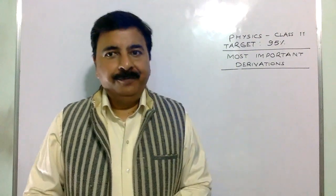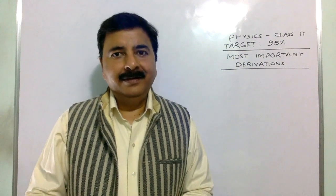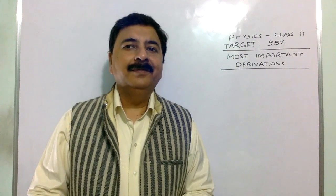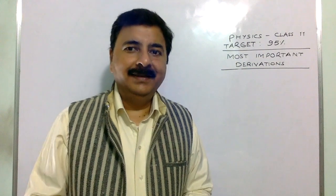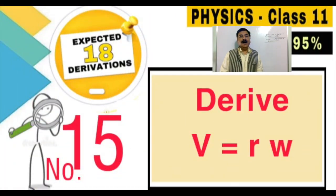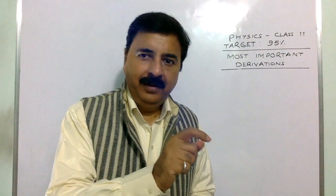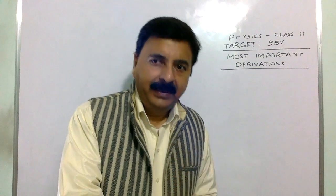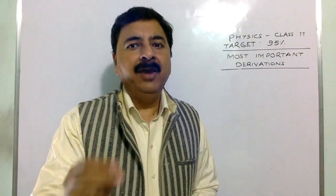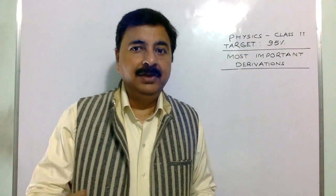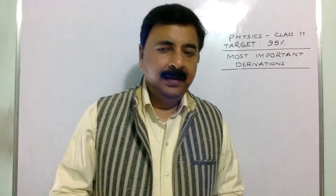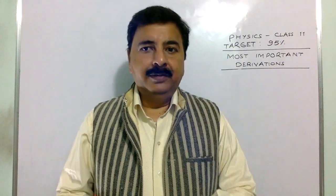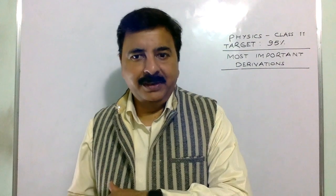Derivation number 15 is a tricky one. You should practice it twice or thrice. V = rω — the relation of linear velocity with angular velocity. It's a tricky derivation; you should go through it at least twice. This is from circular motion.